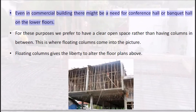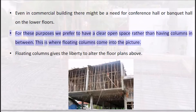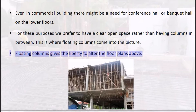Even in commercial buildings, there might be a need for a conference hall or banquet hall on the lower floors. For these purposes, we prefer to have a clear open space rather than having columns in between. This is where floating columns come into the picture — floating columns give the liberty to alter the floor plans above.